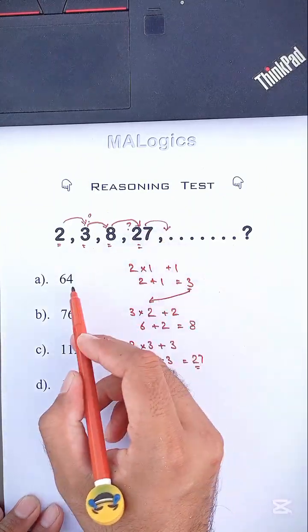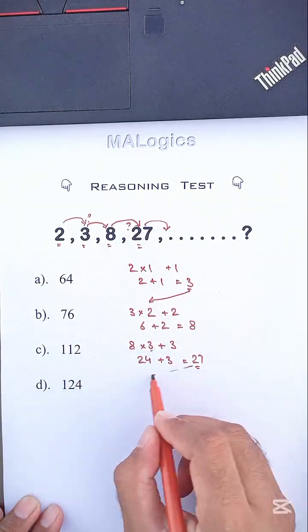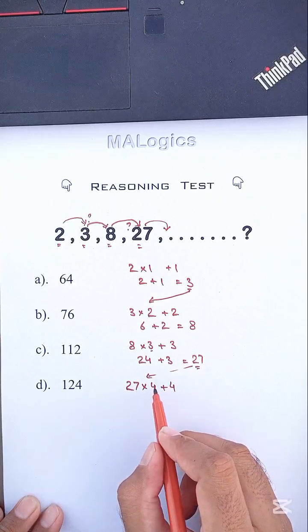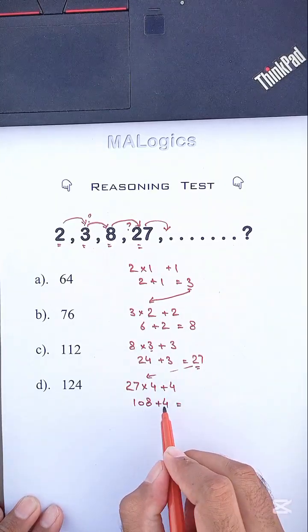Yes! We are near to our answer. Okay, 27 times 4 plus 4. Here, 27 times 4 equals 108. Now 108 plus 4 equals 112.